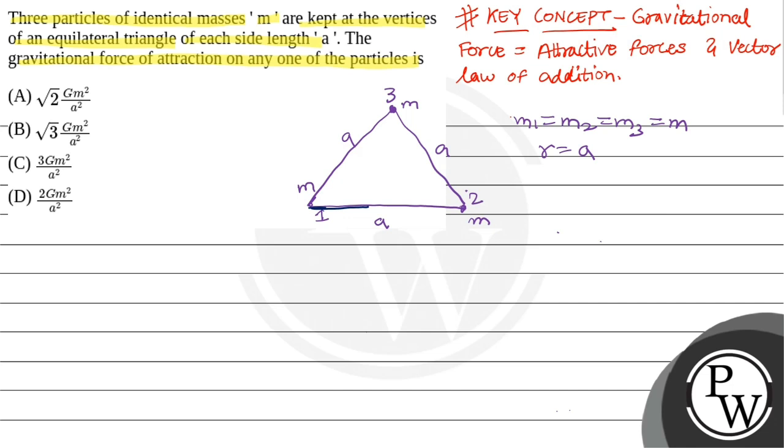So force on 1 due to 2 will be F12, and force on 1 due to 3 will be F13. And we know that F13 equals F12, that is equals to F, and that equals to GM² upon R square, which is GM² by A square.